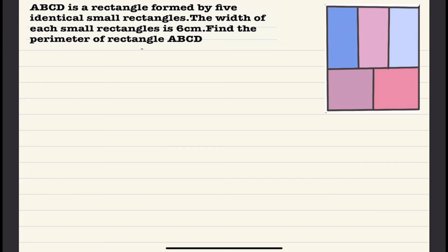Welcome to Intellectual. In this video tutorial we are given a rectangle with five small rectangles. The width of each small rectangle is six centimeters. We are not given the length of the rectangle and we have to find out the perimeter of the rectangle.